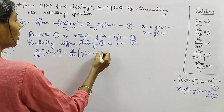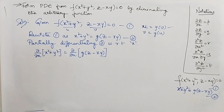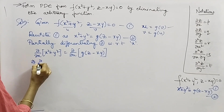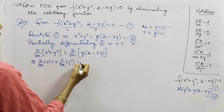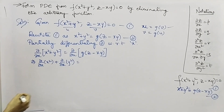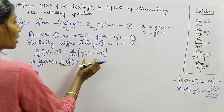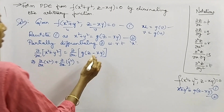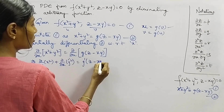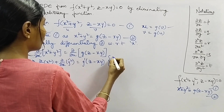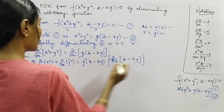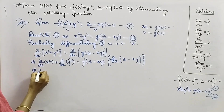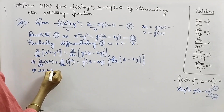Applying ∂/∂x to both sides: the partial derivative of x² is 2x, and the partial derivative of y² (treating y as constant) is 0. On the right side, the partial derivative of g(z − xy) is g'(z − xy) times the inner derivative, which is ∂/∂x of (z − xy).